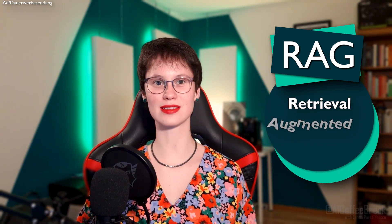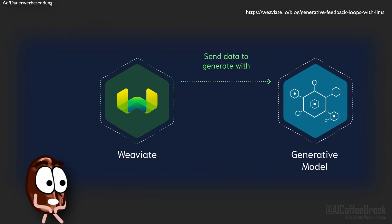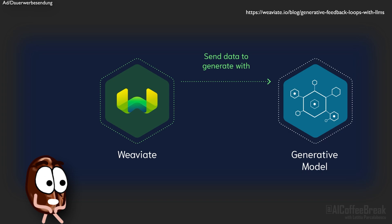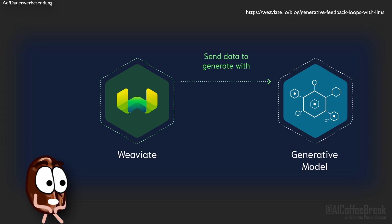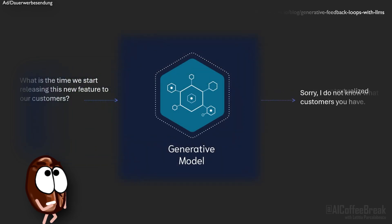Let's start with explaining RAG, which is already common practice to give generative large language models more specific or updated context. RAG stands for Retrieval Augmented Generation, and it uses a vector database like Weaviate to fetch relevant data for a language model to better contextualize the user's query and generate a more relevant, up-to-date response.